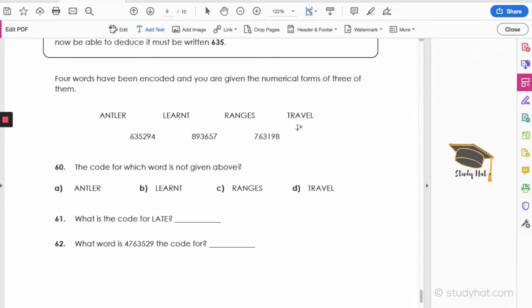And we can just do a quick check as well. We know they both have R's, so if that's right then this R must be 6, and then we can see that 6 is in the fourth place here, as appropriate with LEARNT. So let's put those codes there: 8, 9, 3, 6, 5, 7, and then TRAVEL: 7, 6, 3, 1, 9, 8.